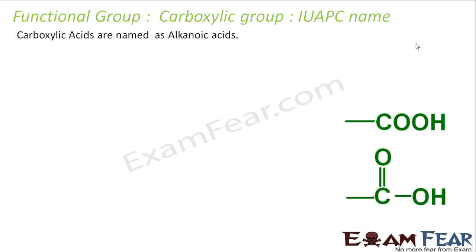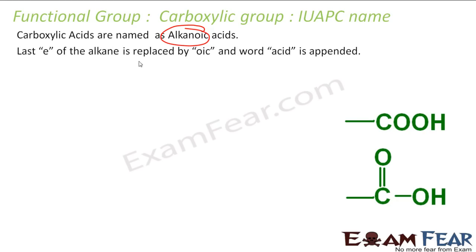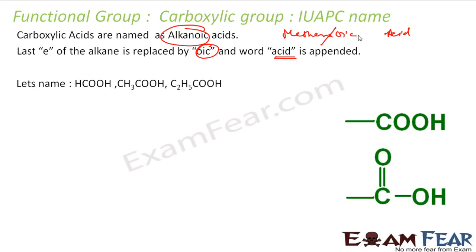Now let us do the naming convention. Carboxylic acids are named as alkanoic acids. You take the alkane name, remove the final E, and add 'oic acid'. For example, methane becomes methanoic acid. For CH3COOH with two carbons, it is ethane — remove E, add oic acid — ethanoic acid. This is the IUPAC naming convention.